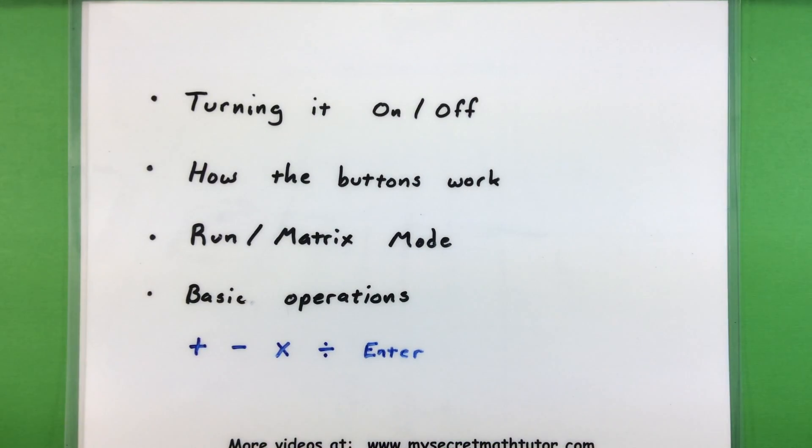Specifically what I'll cover is how you can turn it on and off, how some of the main buttons work, and how you can use that run matrix mode to do some really basic operations like add, subtract, multiply, divide, and really get into doing some quick calculations. So let's go ahead and grab that calculator and get down to business.